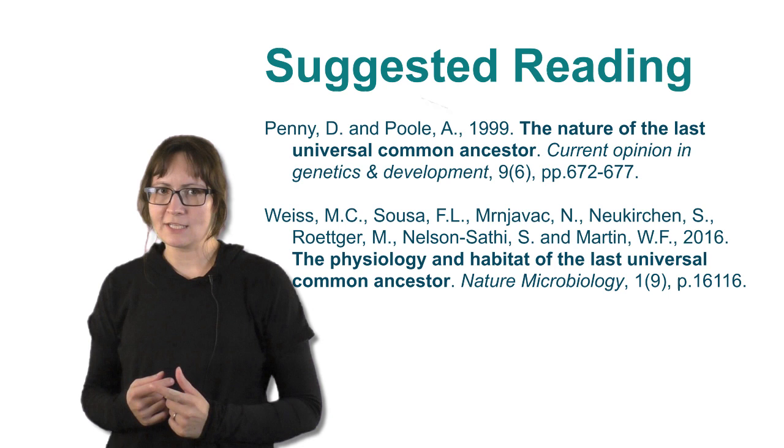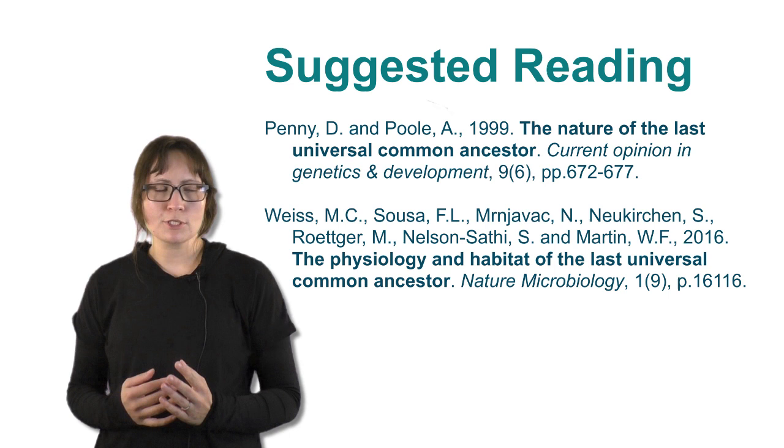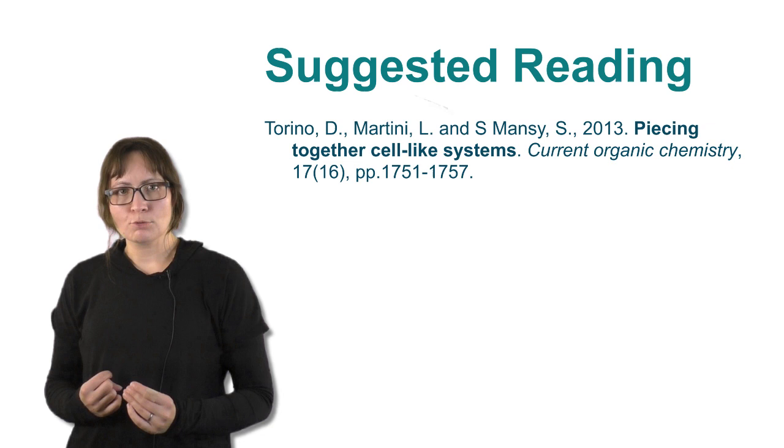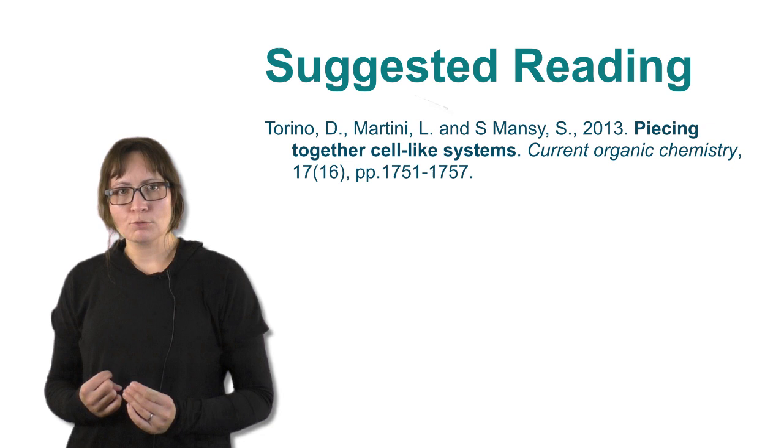This Current Opinion article discusses possible cytology of the last universal common ancestor. The Nature Microbiology paper is a phylogenetic analysis discussing possible genomes of LUCA. We can also try to build LUCA-like cells to learn more about what it takes to make the simplest living system. This Current Organic Chemistry paper is a synthetic biology perspective on reconstructing LUCA-like cells in the lab.